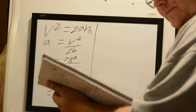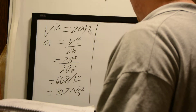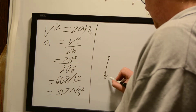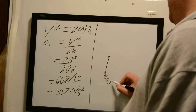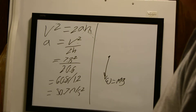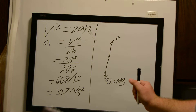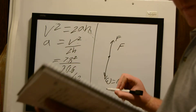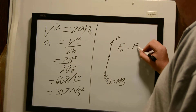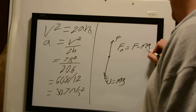Part C asks us to draw a free body diagram and find the net force. Drawing him as a particle, we know the forces acting on him: his weight pulling him down, which is mass times the acceleration of gravity; and for every action there is an equal and opposite reaction, so there is a force pushing him up. The net force equals the upward force minus the downward force, which is mass times gravity.